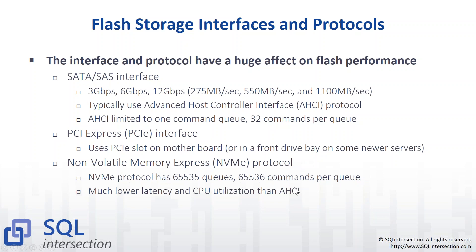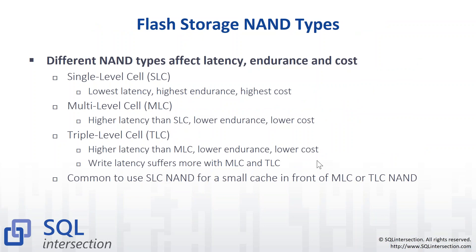Flash-based NAND types: you have single-level cell (SLC), multi-level cell (MLC), and triple-level cell (TLC). SLC is the most expensive with the lowest latency and the highest endurance. From a cost perspective, you might not be able to afford SLC, so you see more MLC and TLC — sometimes with a little SLC in front as a cache. That's one reason flash storage has become more affordable. Just be aware it has an effect on write performance and endurance especially.